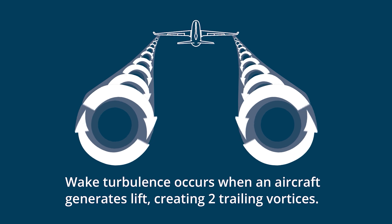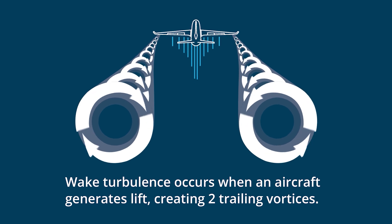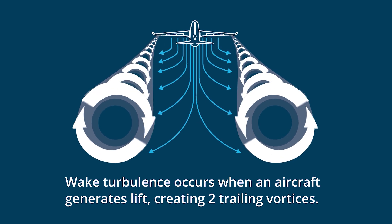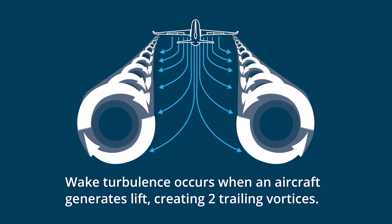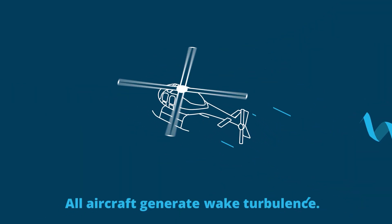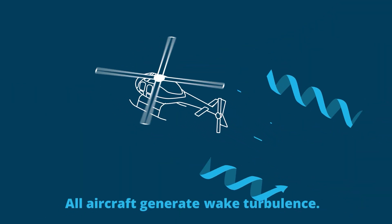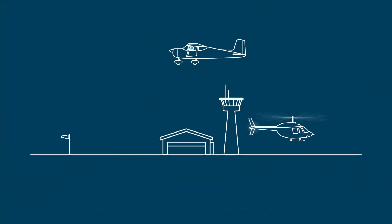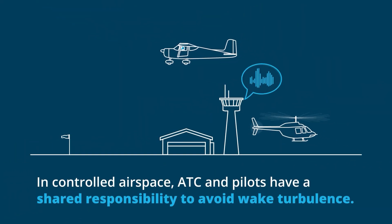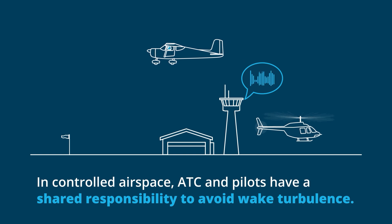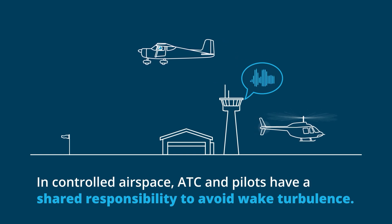Wake turbulence occurs when an aircraft generates lift, creating two trailing vortices. All aircraft, including helicopters, generate wake turbulence. In controlled airspace, Air Traffic Control and pilots have a shared responsibility to avoid wake turbulence.